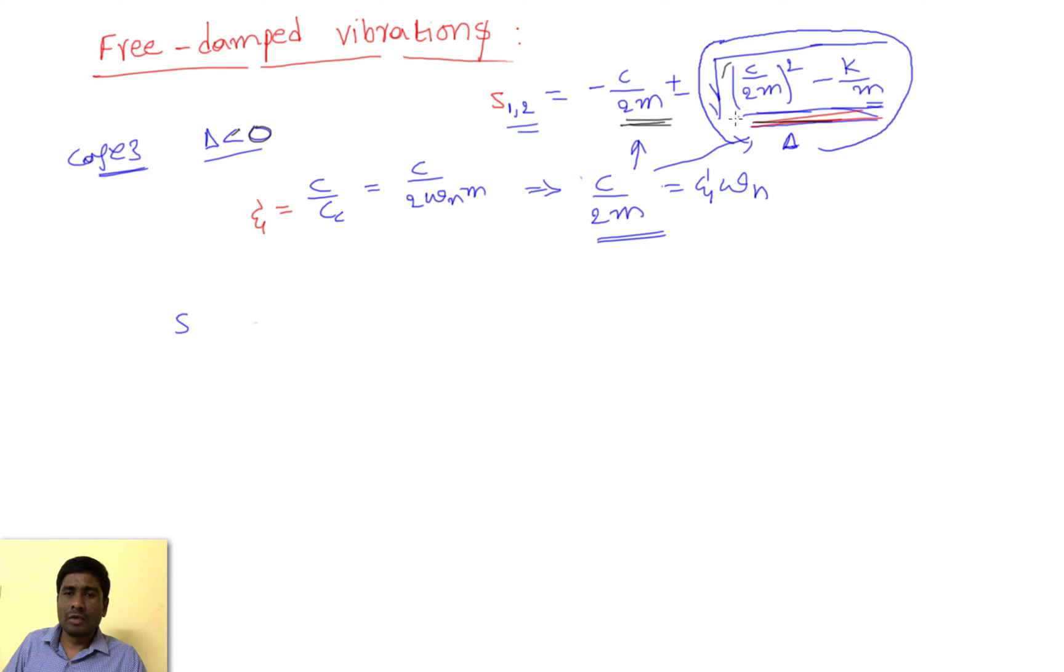So s1, s2 equals—and here we have minus one, so square root of minus one will give plus i. So here it will become minus xi into omega n, plus or minus i times omega d.